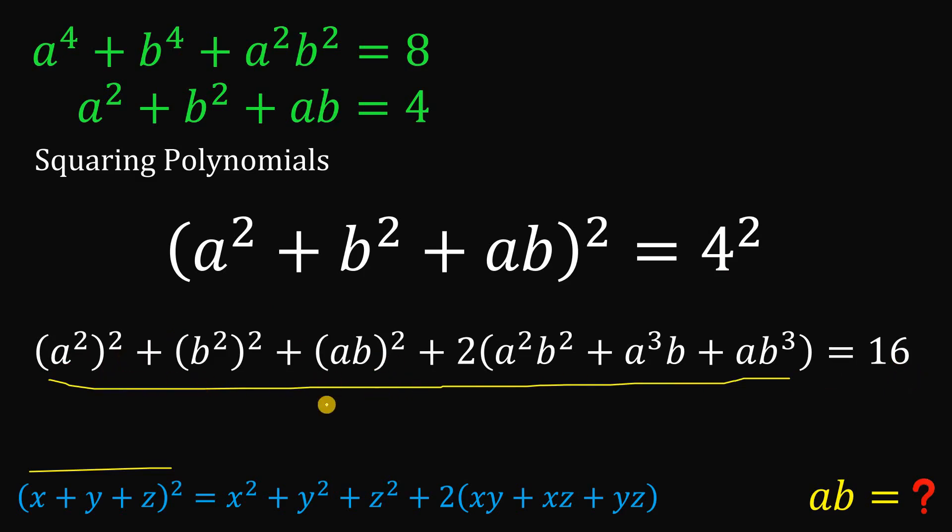Now, simplify all of this. We get something like a raised to the fourth power plus b raised to the fourth power plus a squared b squared plus bring down 2 times the quantity a squared b squared plus a cubed b plus ab cubed.